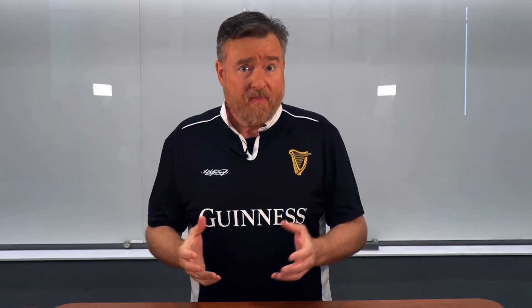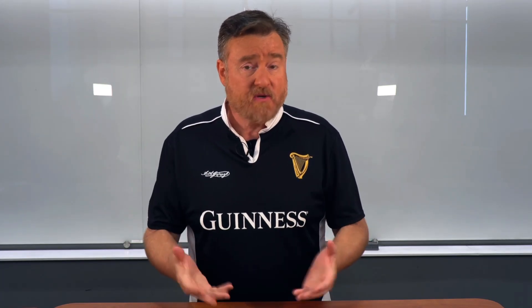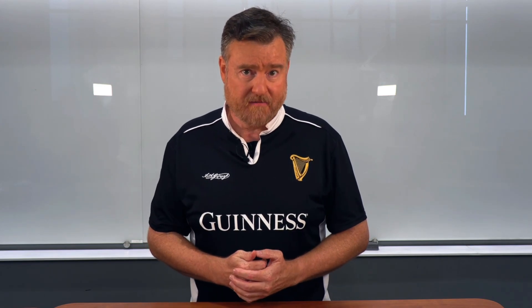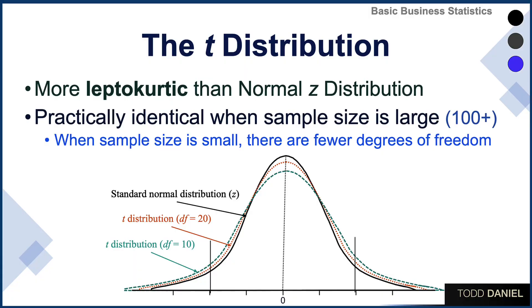At the time it was not called a T distribution — that's what we call it now, and that's why I'm using the term. Here is how this T distribution compares to the original normal curve, or Z distribution. The T distribution is more leptokurtic than a normal curve, meaning that it has more thickness in the tails of the curve. The normal curve is the solid black line. Notice how the tails are pushed out for smaller sample sizes. With fewer degrees of freedom, the tails become more and more thick.